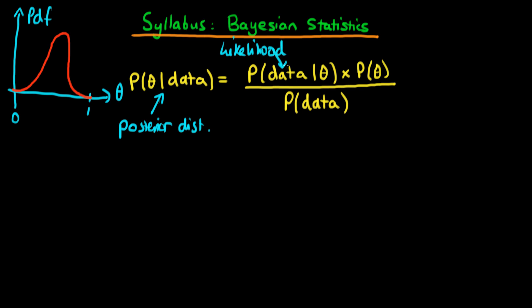What do we mean by likelihood? You can think about it as a sort of probability: what is the probability that we would have obtained that data given our choice of theta? It's not exactly correct because technically it's not actually a probability, but you can for all intents and purposes think about it in those terms. The idea with the likelihood is that we specify a model for actually generating our data, and then for each particular value of theta, what would be the probability — if that model was correct — that we would have actually obtained our data.